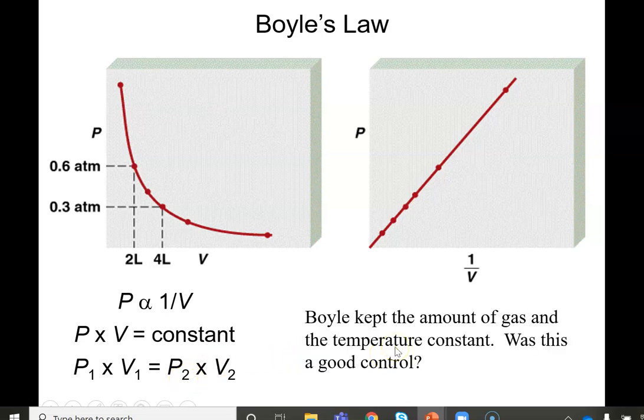Boyle does keep the amount and temperature constant because he's aware that both the amount of gas and the temperature of the gas are going to play into how much space it needs to take up and how much pressure it has. So it's really important to use this equation only when the only things that are changing are the pressure and the volume. The amount and temperature must be constant.